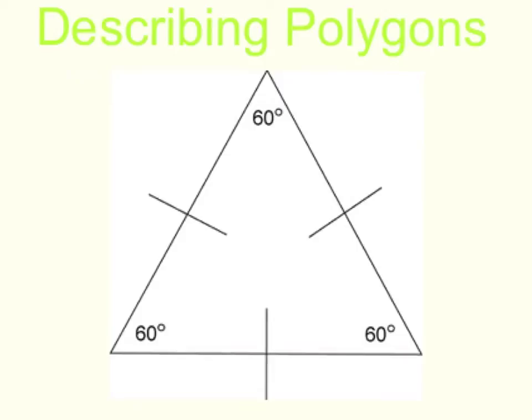In this case, because it's an equilateral triangle, all sides are the same length. They are marked with this line, or hash mark, that tells us that. Because there's only one on each side, we know that they are all equal in length.